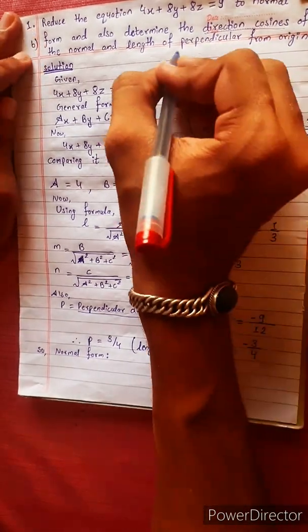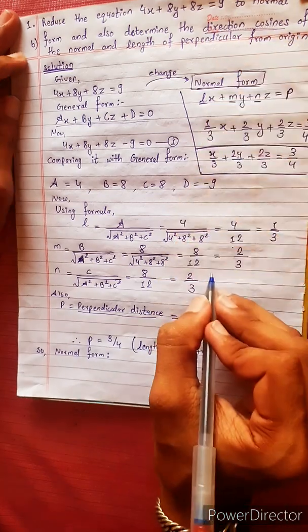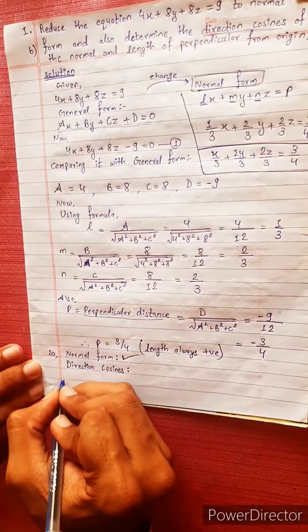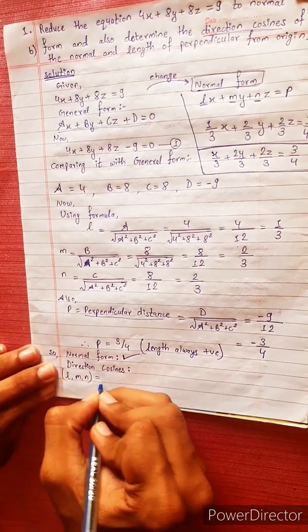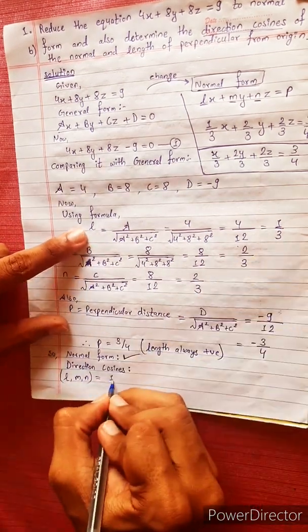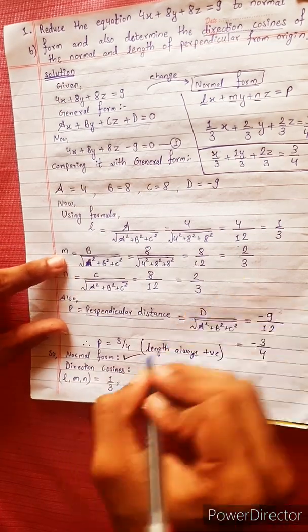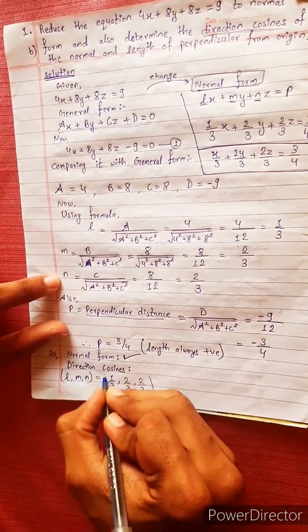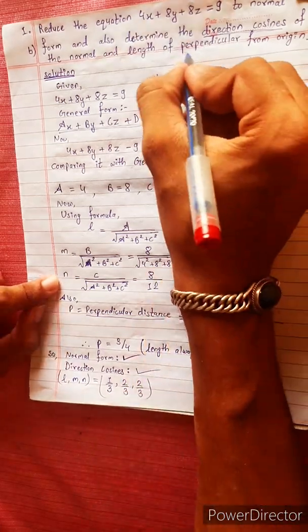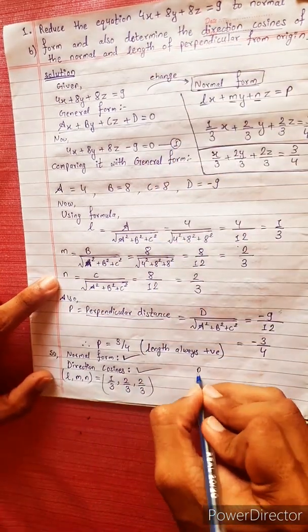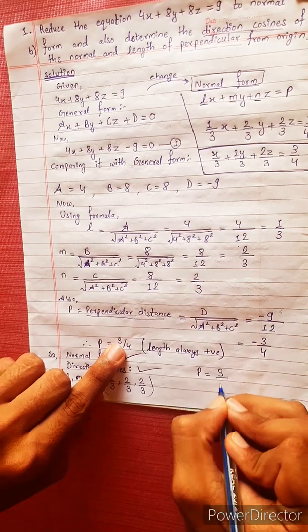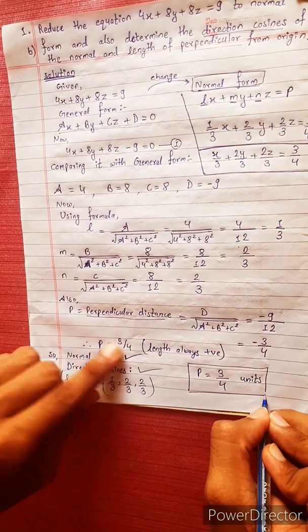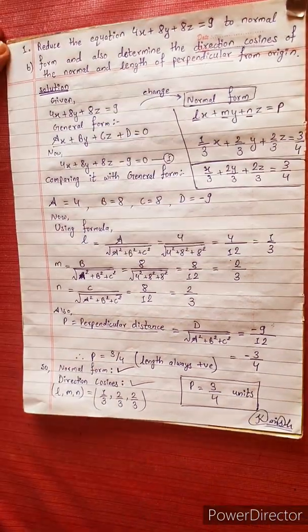The direction cosines are: L = 1/3, M = 2/3, N = 2/3. The length of the perpendicular is p = 3/4 units. I hope you will learn from this.